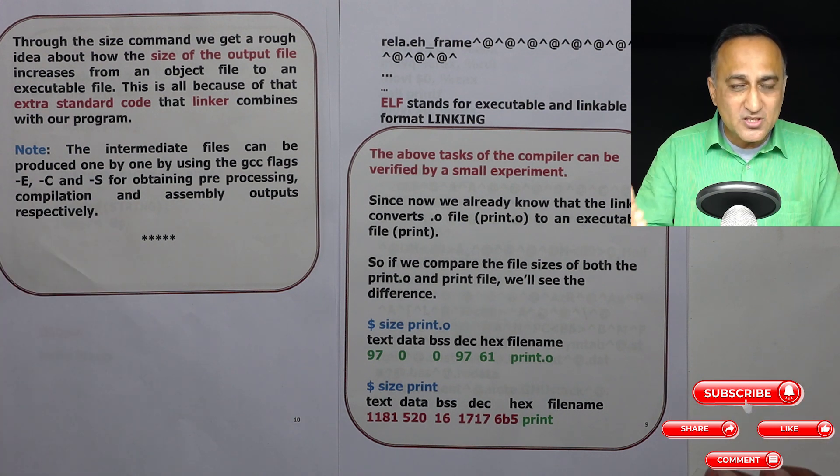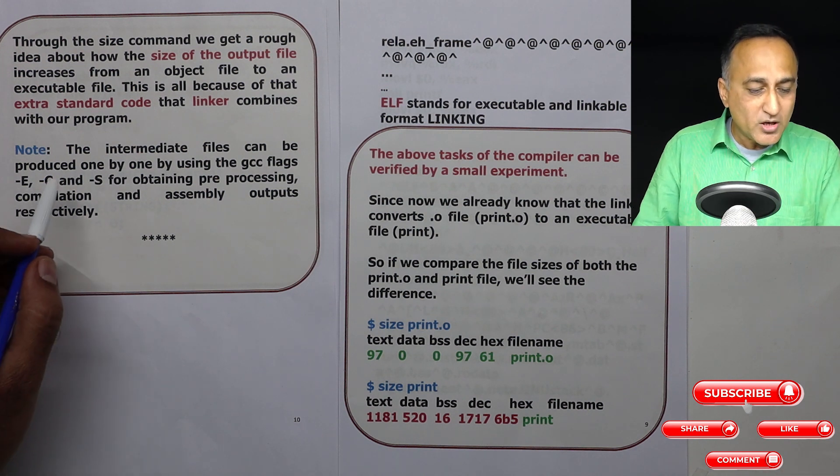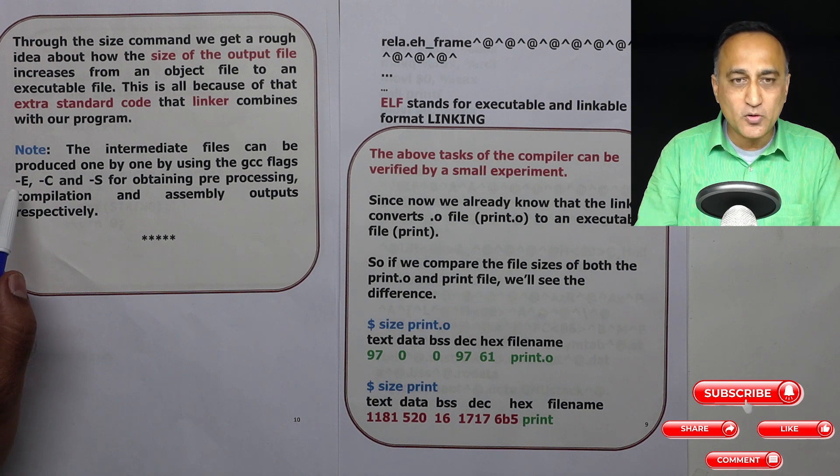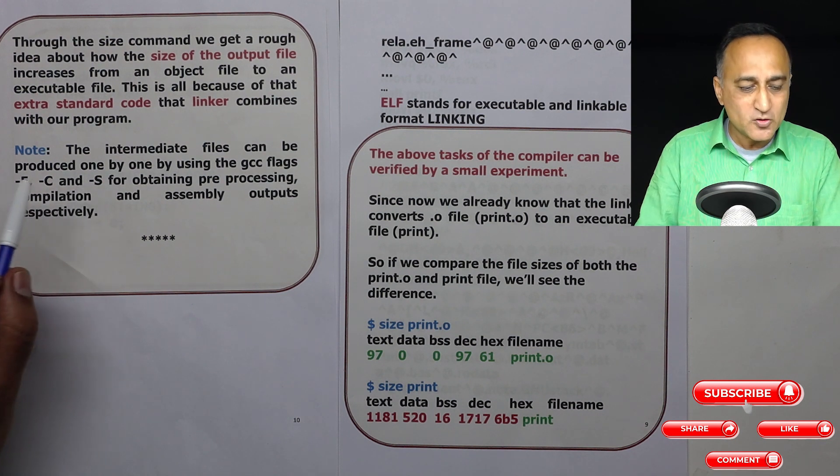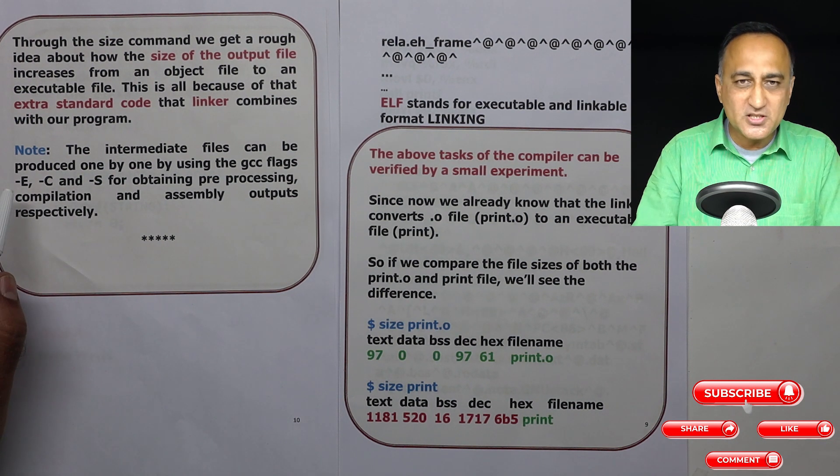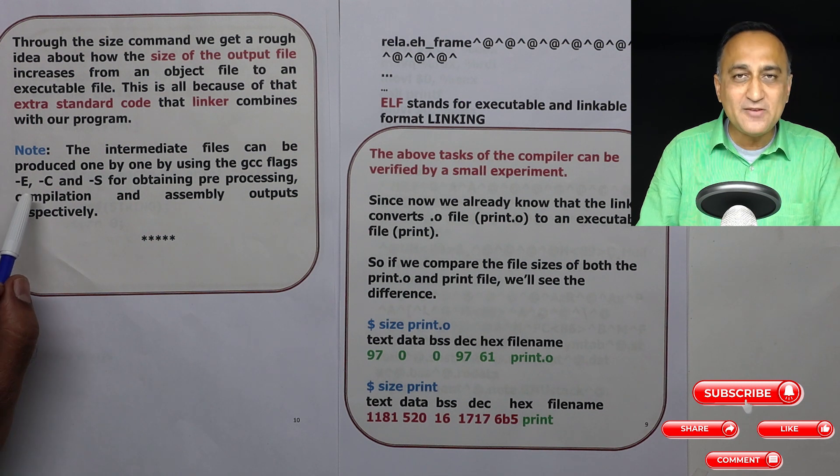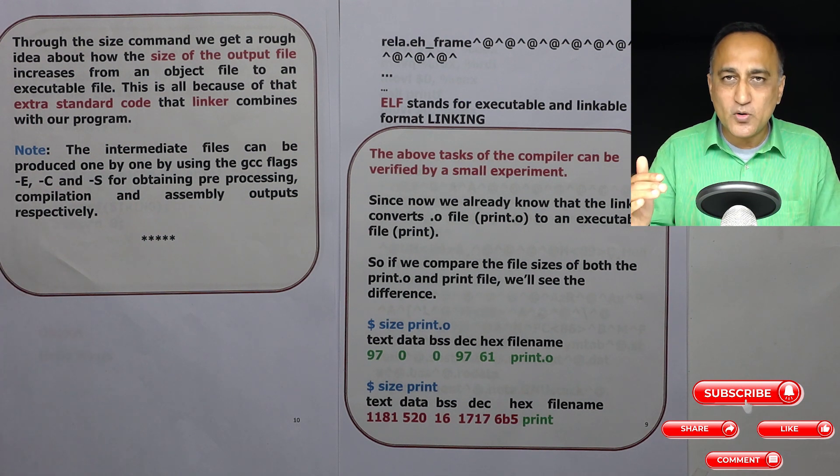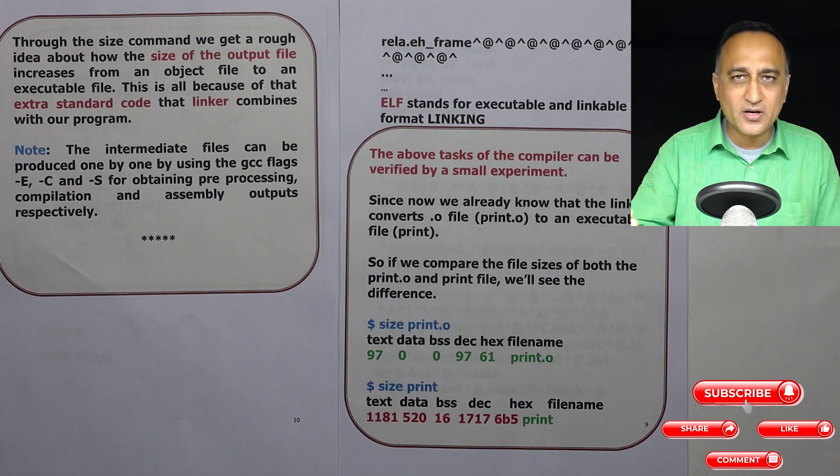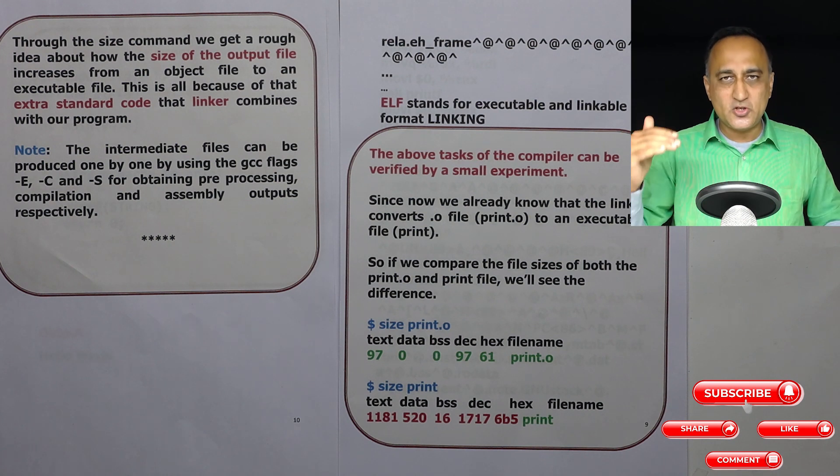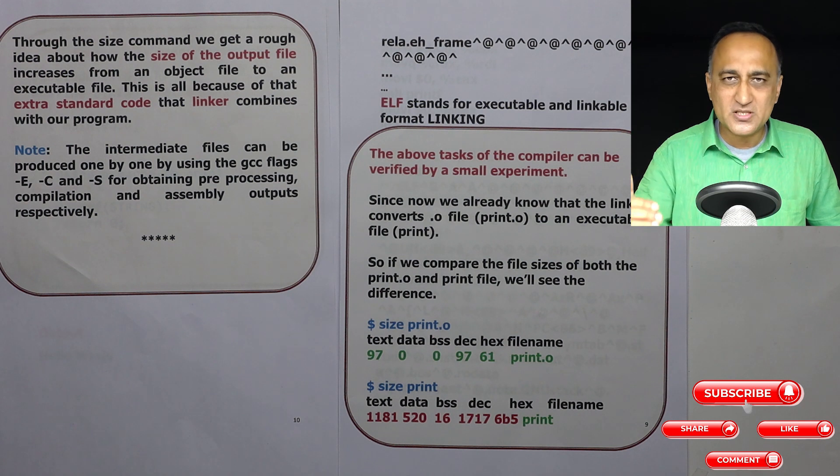Now if you are using the GCC compiler on Linux or Windows you can use the different flags to produce the preprocessor output only, the output after compilation only, the output after assembly only. So what you can do is install the GCC compiler, just compile that program with hyphen E flag you will get the output only after preprocessing, hyphen C only after compiling, hyphen S the object file. So this way you can understand the journey of your C program from the time you type it onto the stage where it is ready for the loader to be loaded into memory.